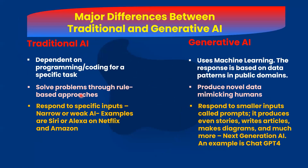2. Traditional AI problem solving, or a particular task accomplishment, is through rule-based approaches. However, in Generative AI, novel data and issues are solved by mimicking humans and conversational styles through queries, also known as prompts.